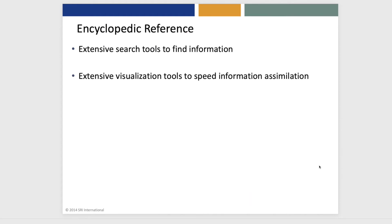In the encyclopedic reference use case, BioPsych provides extensive search tools to help scientists find the information they're looking for, and extensive visualization tools to speed the assimilation of the information found through these searches.